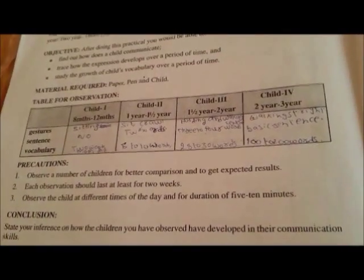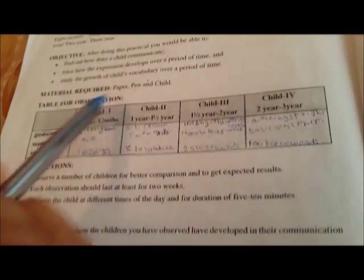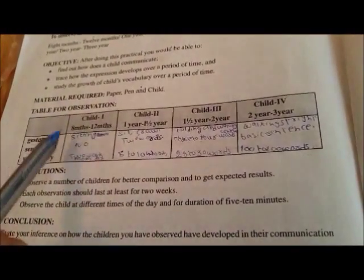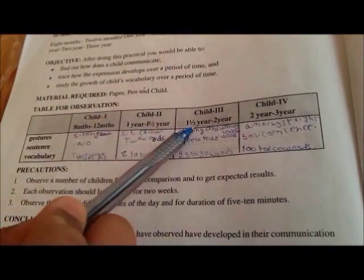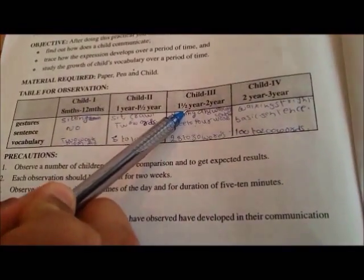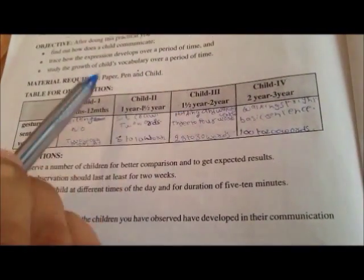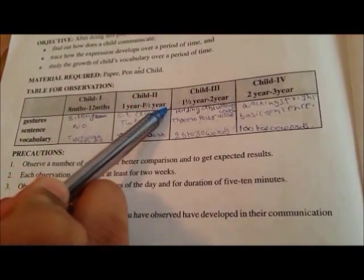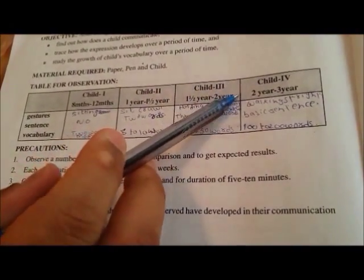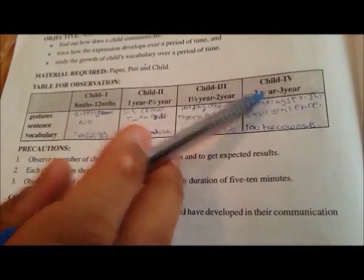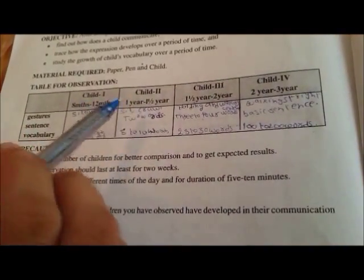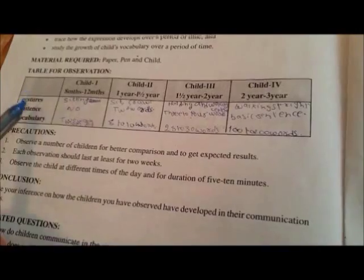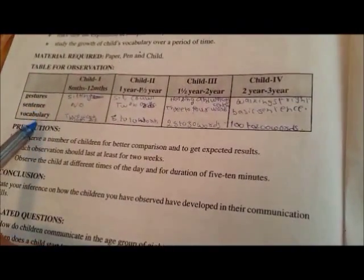Dear students, you have been given this observation table in your booklet. Here you have four columns that says you need four different types of children. The first child should be between eight to twelve months, the second one from one to one and a half, third one from one and a half to two, and the fourth one from two to three years. For each child, you need to identify three things: their gesture, sentence, and their vocabulary.